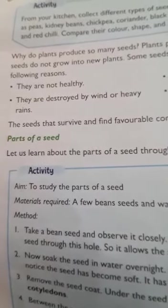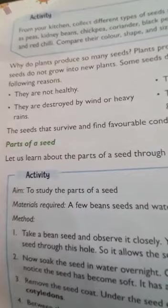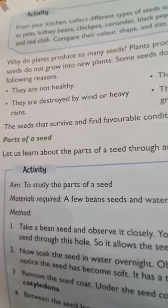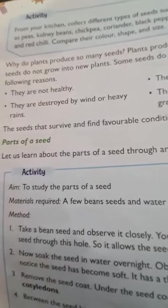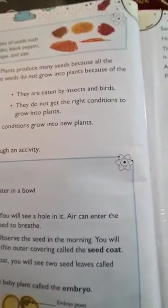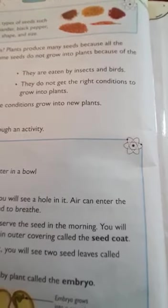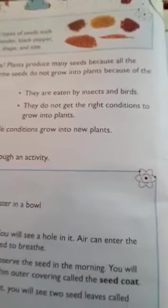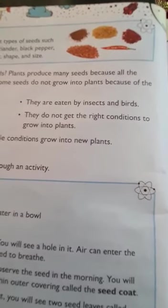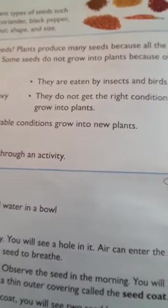Some seeds do not grow into plants for the following reasons: they are not healthy; they are destroyed by wind or heavy rains which can destroy fruits and flowers; they are eaten by insects and birds that sit on plants in gardens and farms; or they do not get the right conditions to grow. A seed needs favorable conditions such as proper rainfall, temperature, and sunlight to become a new plant.